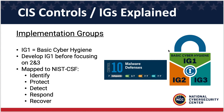Control number 10 has seven safeguards. In terms of implementing them if you're starting at ground zero, you start with implementation group 1, then move to 2, then move to 3.